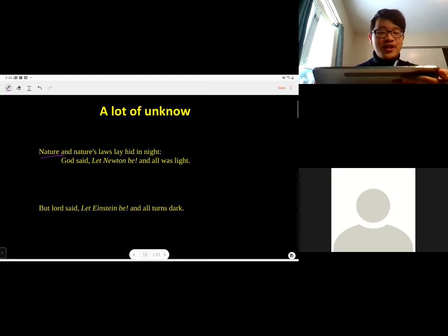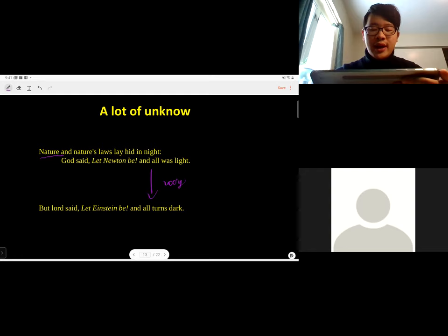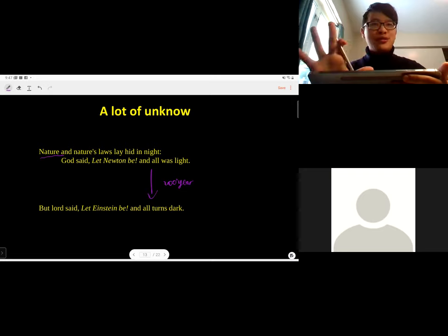There's a word that nature and nature's laws laid hid in light and God said let Newton be and all was light. But after 200 years, when Albert Einstein was born, he put forward a new theory, the special relativity and general relativity, and also the thermodynamics about Brownian motion. And we find we don't understand many things. So the law says that Einstein can be and all turns dark. We have many regions unknown and we are going to explore the new knowledge. And if we have the new theory to explain the new phenomenon, then we can use a new theory to get a new application.